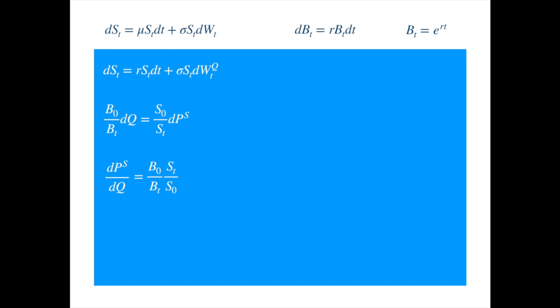Now, we know from the geometric Brownian motion video that the solution of the stock price SDE under the risk-neutral measure is as follows, which we can use to substitute for ST over S0, and we also substitute for the ratio of the bank account from the equation at the top right to get. The terms containing R cancel, and we get.